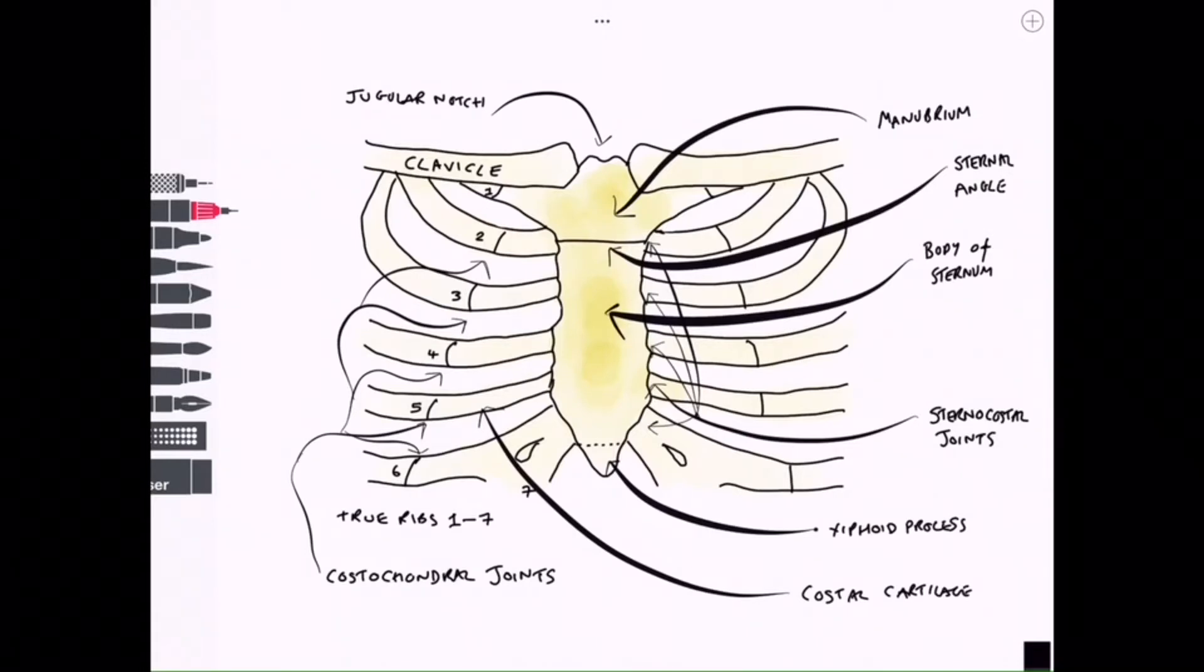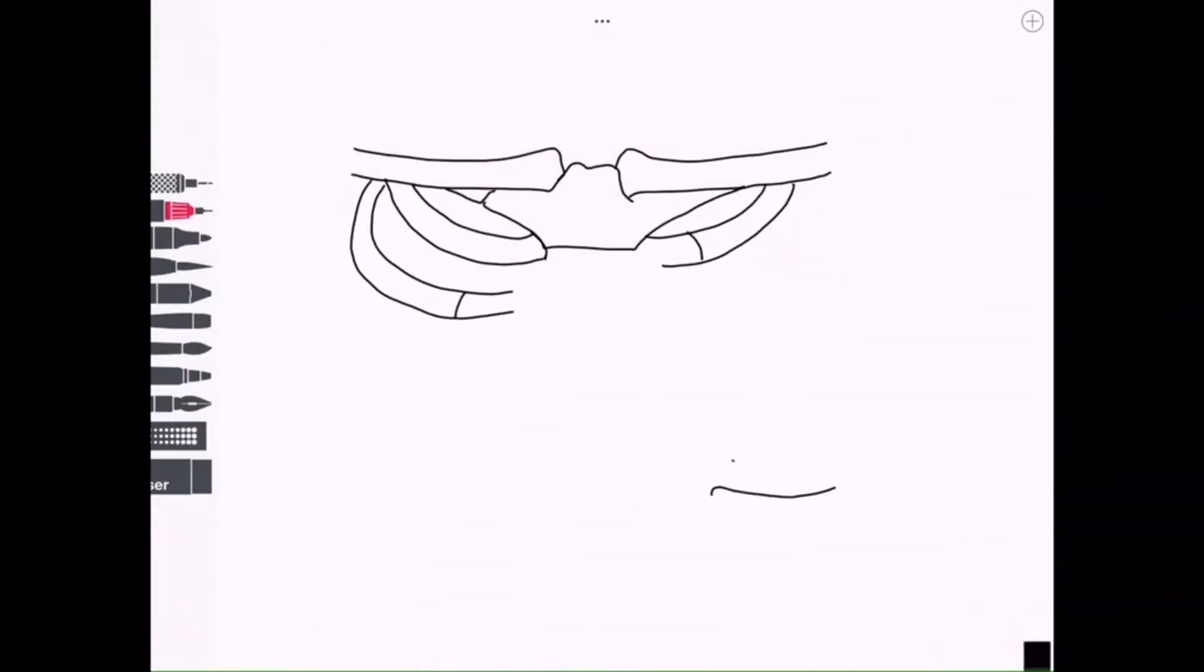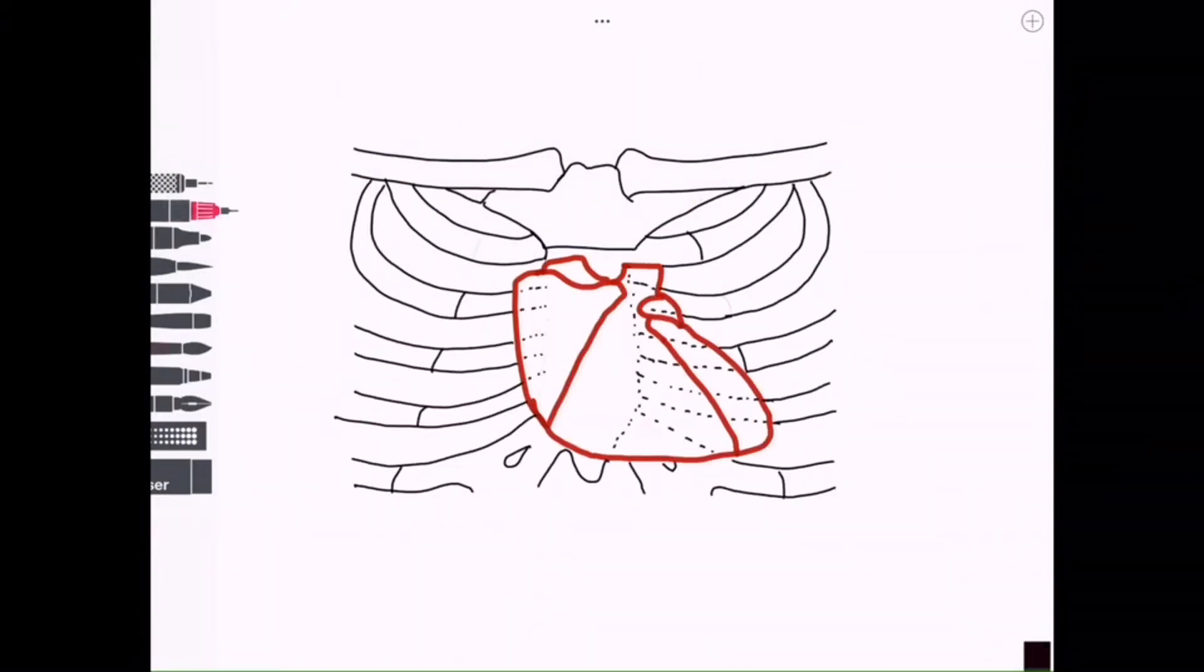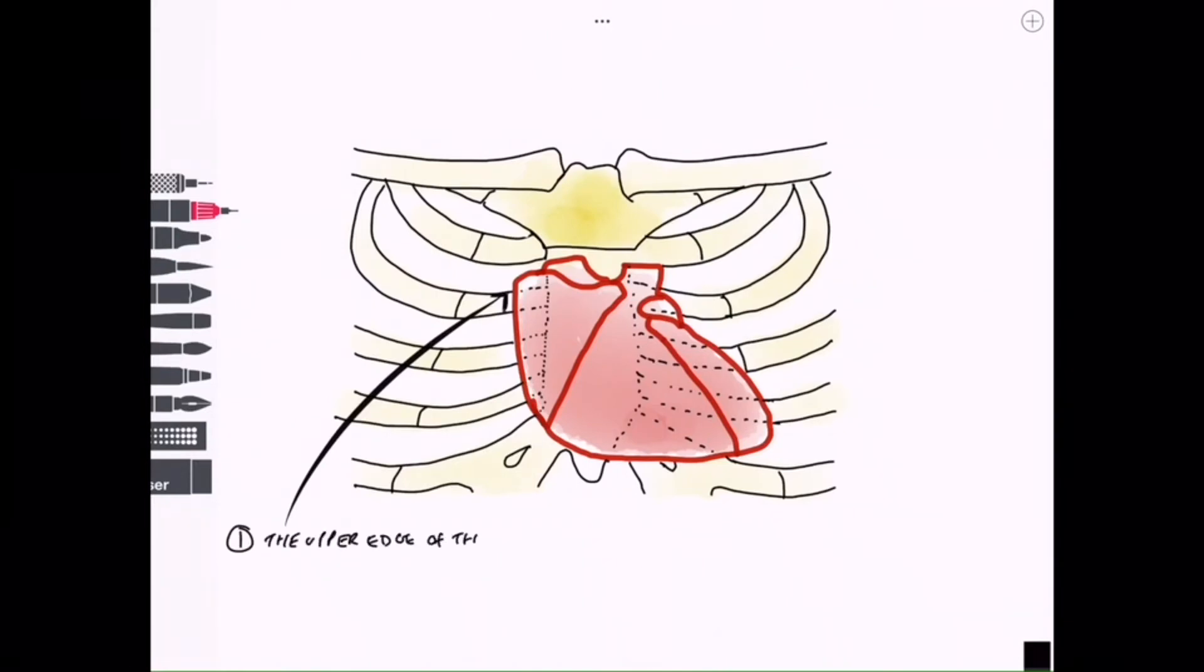So now that we have labeled these key structures on the thorax we can now draw this diagram once more, this time superimposing the heart on there as well. The heart rests on the diaphragm and is covered anteriorly by the body of the sternum and the third to sixth costal cartilages on both sides.